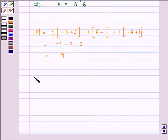Let us find adjoint A. For that we need to find A11, which is minus 1, and so on.